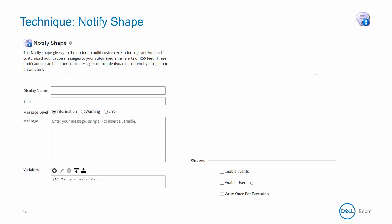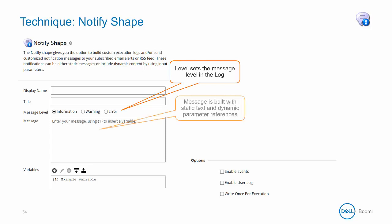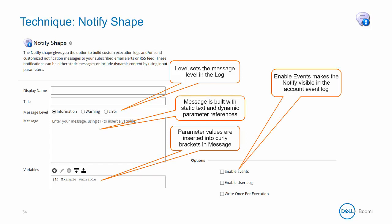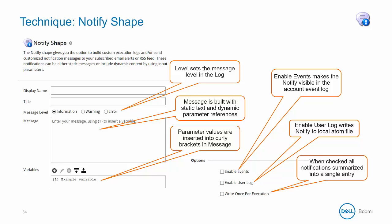Here are the notify properties that can be set. First, set the message level information that you want. The message body can be made up of static and dynamic content — parameters are created using curly brackets. Enabling events makes the notify visible in the account event log. Enable user log writes the notify message to the local atom file. When checked, the write once per execution option batches the notify messages into one single message.